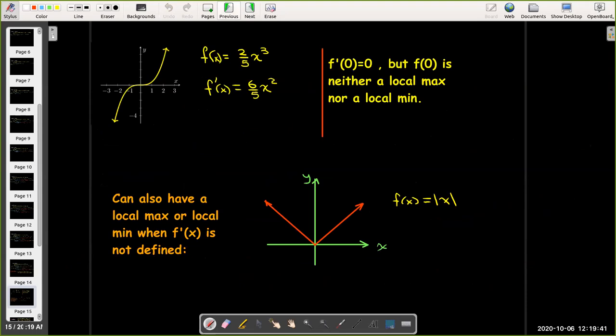We can just think of an x cubed function like f(x) equals 2/5 x³. Here we have our graph. Take the derivative and we can see that the derivative is 0, so f'(0) equals 0, but 0 is neither a local max nor a local min. As you go to the left the numbers get smaller, the y coordinates get smaller, but when you go to the right the y coordinates get larger.